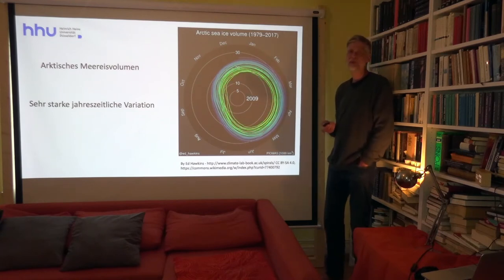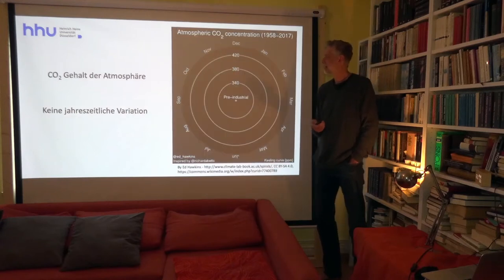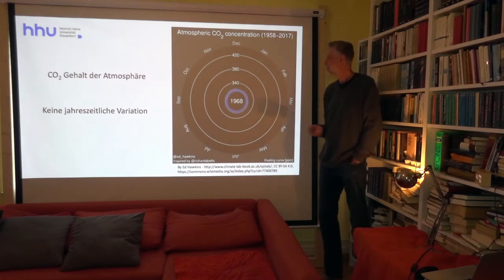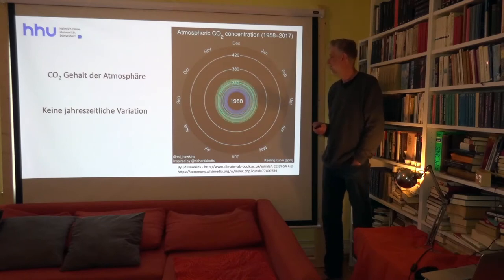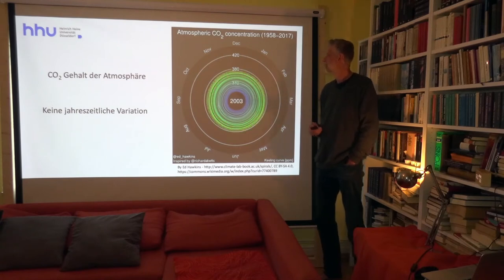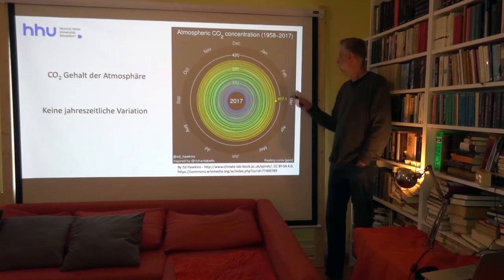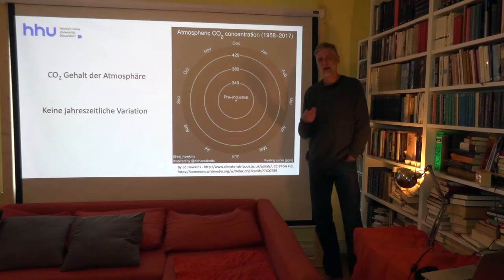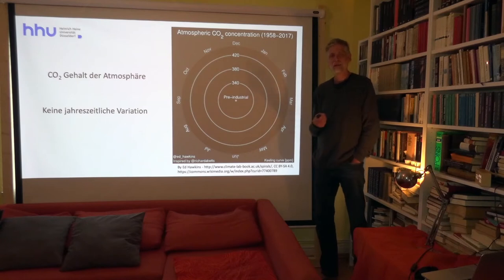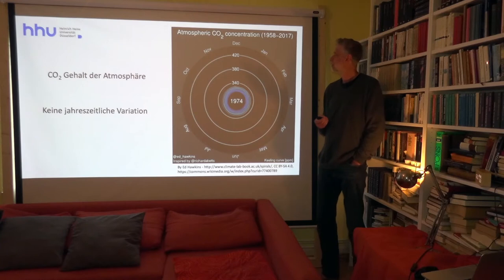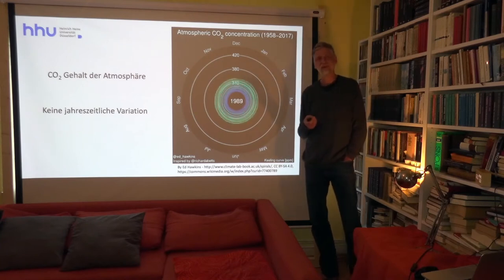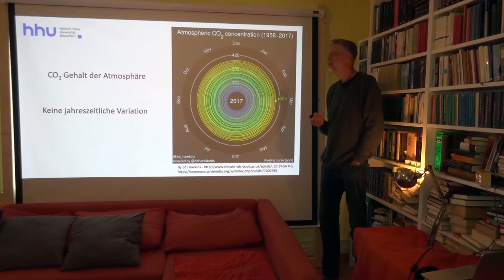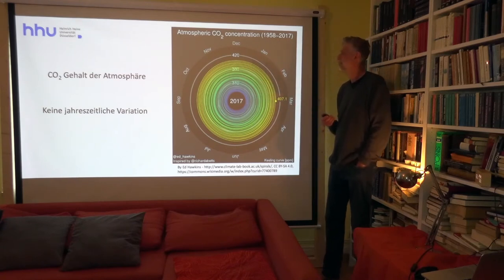Noch ein Beispiel für eine Spirale, die im Grunde gar keinen Jahreszeitengang hat, sondern extrem gleichmäßig ist: der CO2-Gehalt der Atmosphäre. Wir fangen bei 280 ppm, dem vorindustriellen Gehalt, an und gehen schrittweise weiter bis ins Jahr 2017, wo wir bei 407 ppm enden. Ppm bedeutet Parts per Million – ein Volumenteil CO2 auf eine Million Volumenteile Luft. Wir sind heute im Jahr 2020 bei 414,3 ppm angekommen.